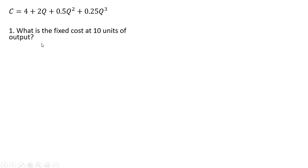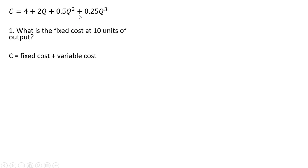Question 1: what is the firm's fixed cost at 10 units of output? Here's the firm's total cost. Total cost is part fixed cost plus part variable cost, so the fixed cost part is just a constant — fixed cost is $4.